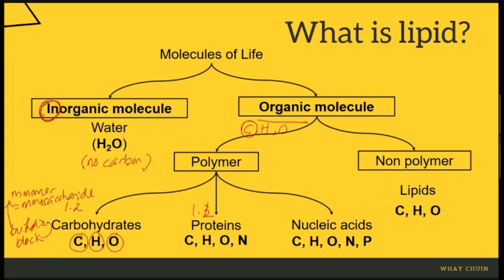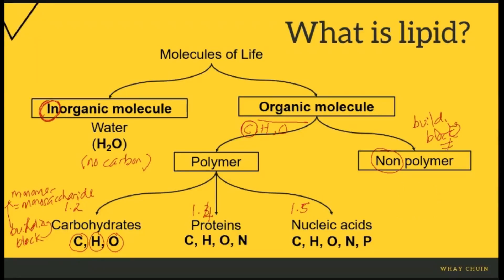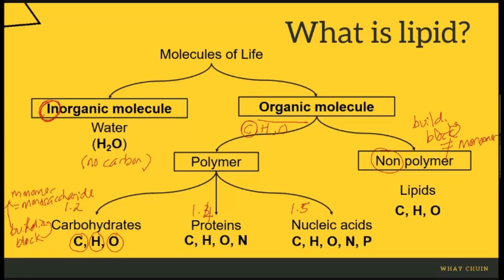This week we are going to cover 1.4 proteins and 1.5 nucleic acid, which are also polymers — large molecules consisting of different monomers. But today we are going to study the only organic molecule which is non-polymer. Lipid bukan polymer sebab building block dia — molekul-molekul yang membina lipid — bukan monomer, bukan ulangan. Mereka masih organic sebab dia ada carbon, hydrogen, and oxygen.